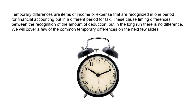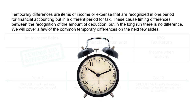The next category is temporary differences. They are items of income or expense that are recognized in one period for financial accounting but in a different period for tax, and vice versa. These cause timing differences between the recognition of the amount of a deduction, but in the long run there is no difference — they will even out and net out.